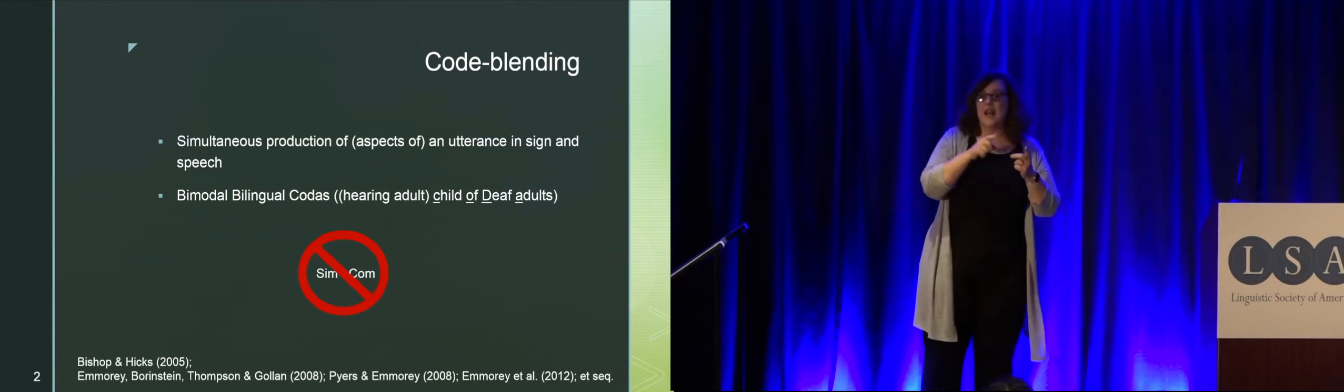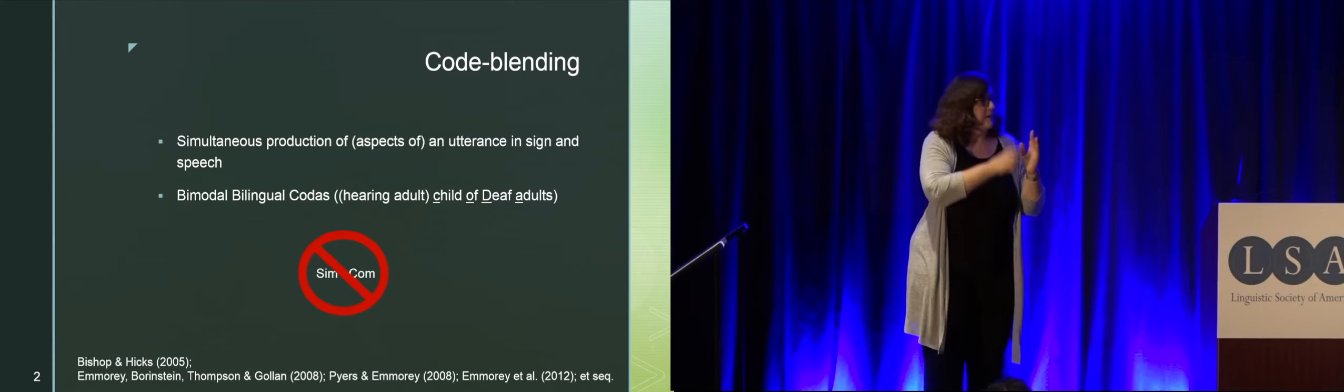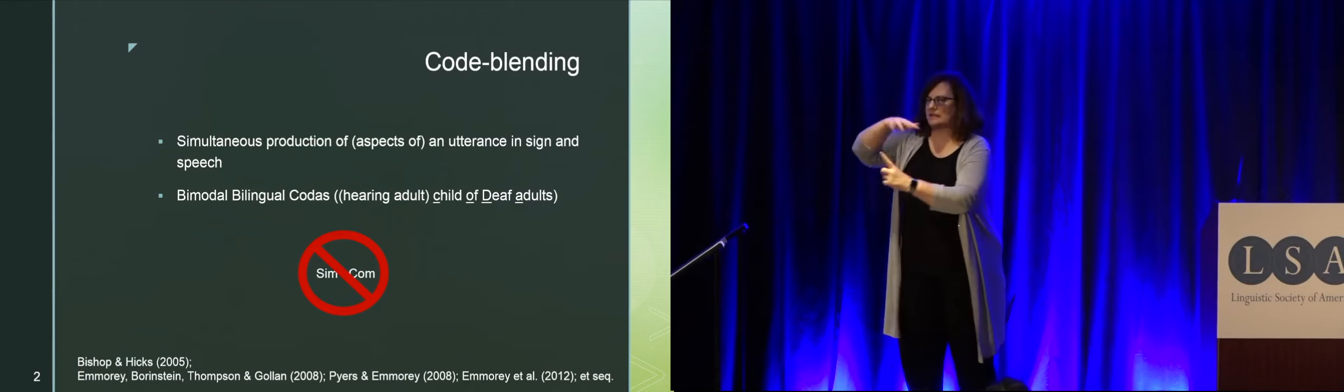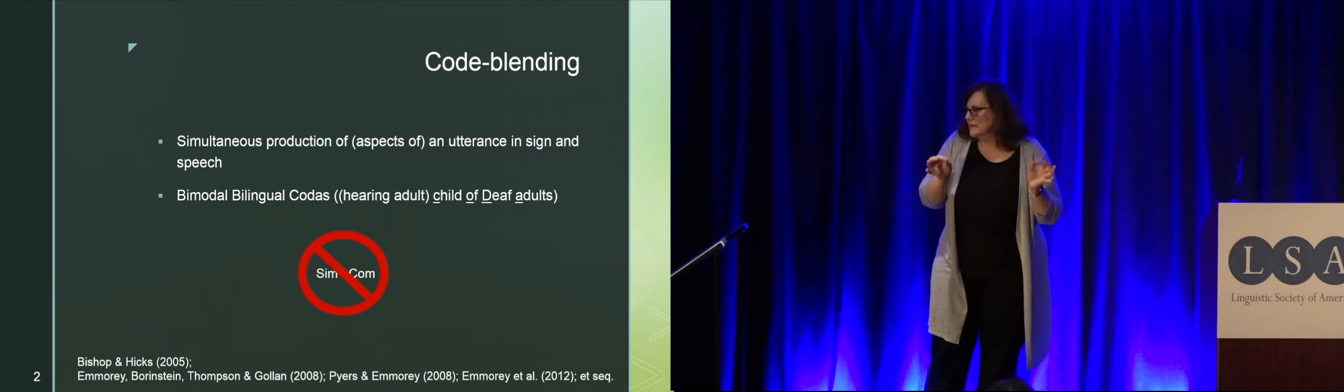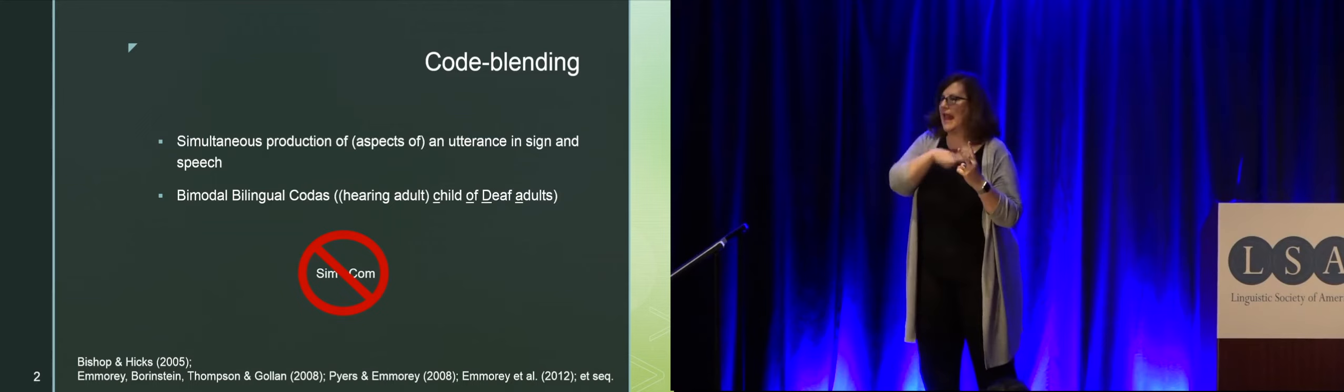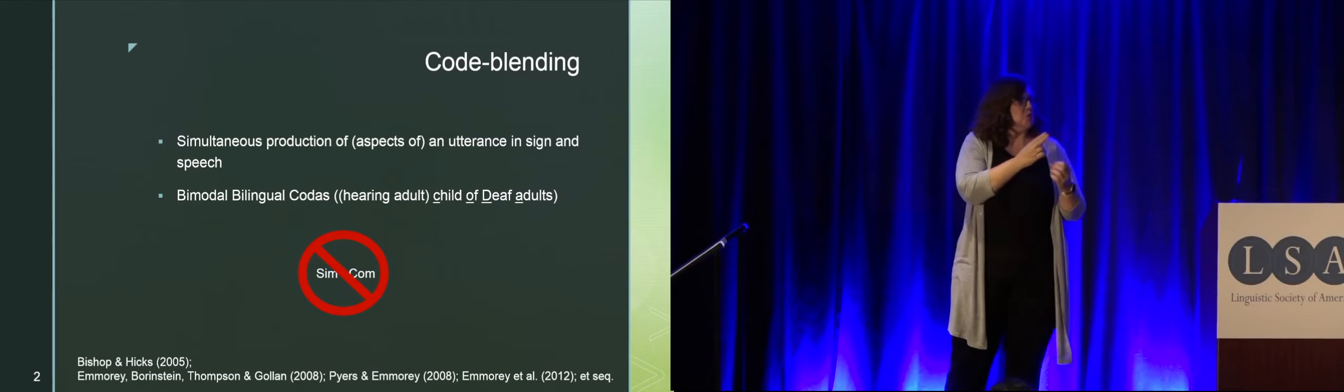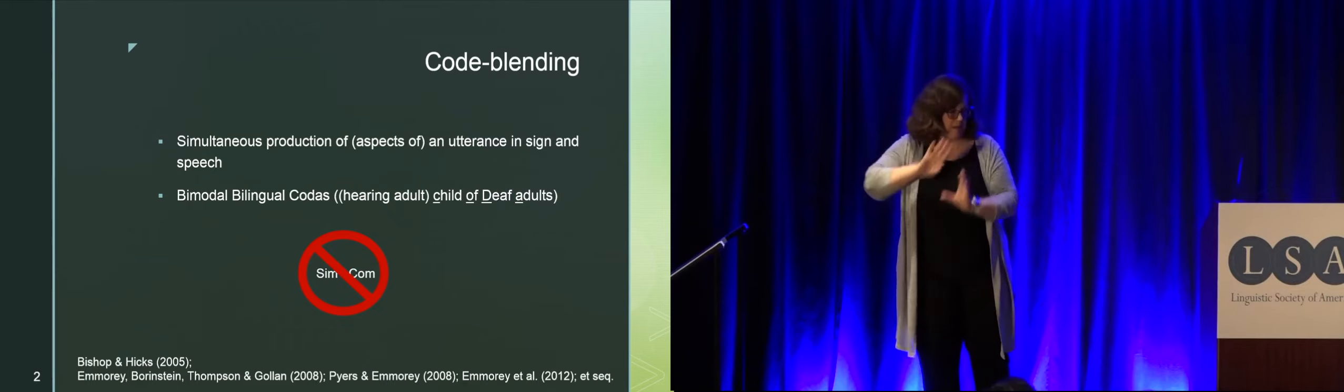So who does this kind of speech and signing simultaneous production? People who grow up signing and also use spoken language at the same time. They are usually hearing people who have deaf parents. They are referred to in the community as CODAs, children of deaf adults. They are then now endowed with two modes of communication and referred to as bilingual bimodals.